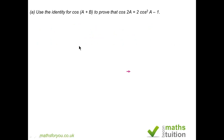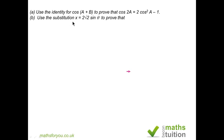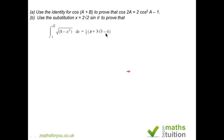For the first part of the question, it says: use the identity for cos(a+b) to prove that cos 2a is equal to 2cos²a − 1. The second part says: use the substitution x = 2√2 sinθ to prove that the integration of √(8 − x²) within the limits of √6 and 2 is equal to (1/3)(π + 3√3 − 6).